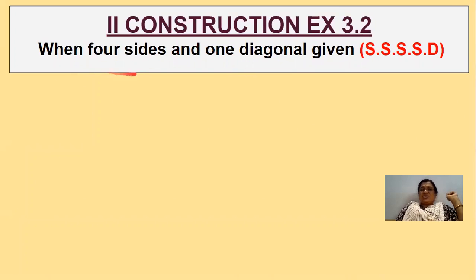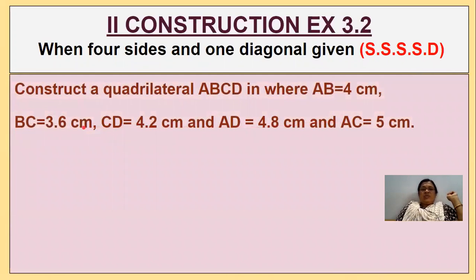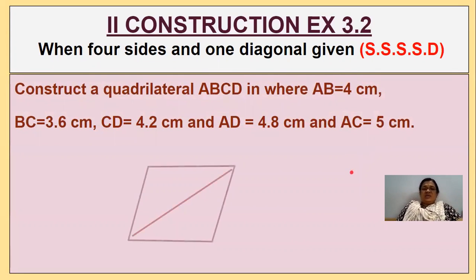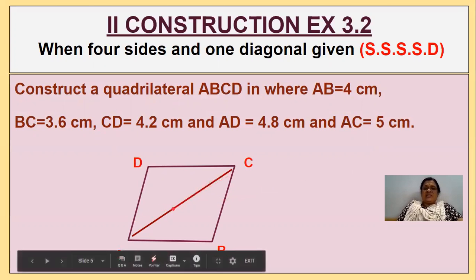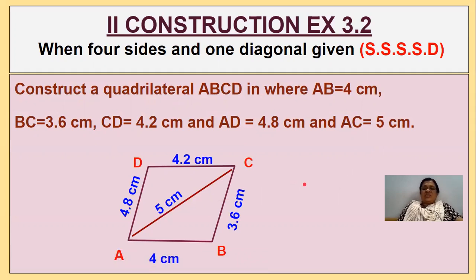Construction 2 is about constructing a quadrilateral when 4 sides and 1 diagonal are given. Let us take a problem: construct quadrilateral ABCD where AB = 4 cm, BC = 3.6 cm, CD = 4.2 cm, AD = 4.8 cm, and diagonal AC = 5 cm.